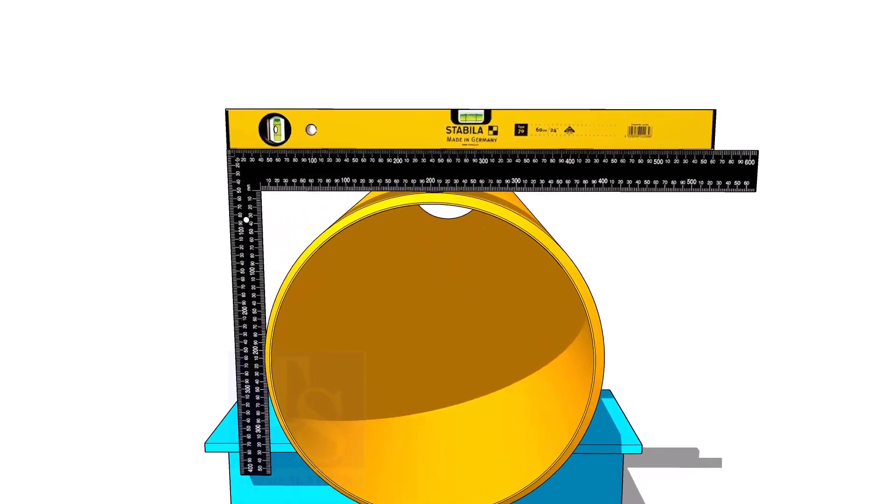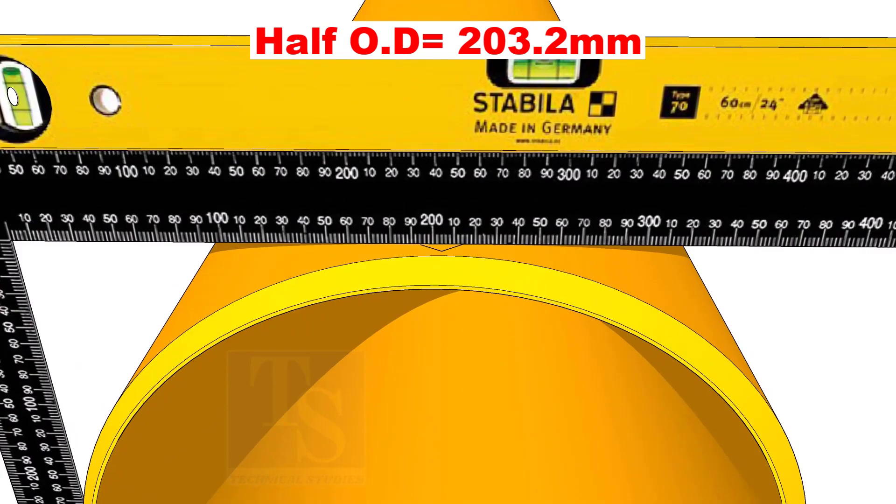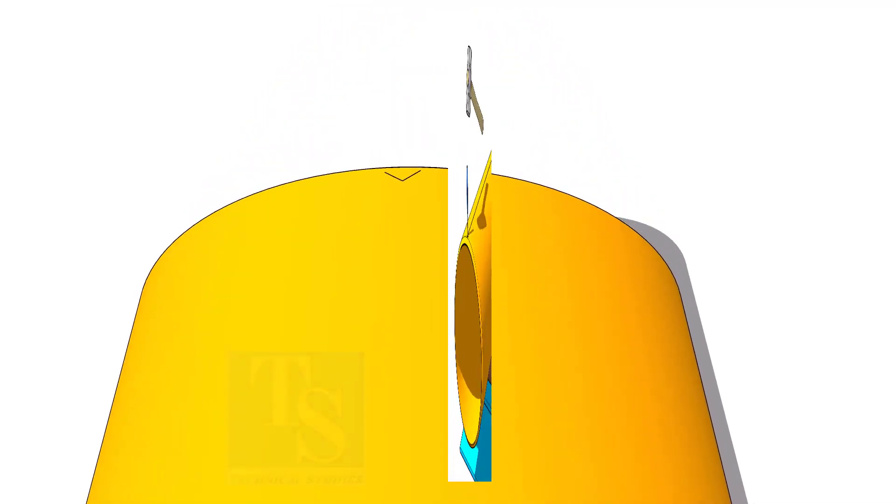Mark the half OD on the top of the pipe. Don't forget to cross-check from the opposite side. Mark the center of the other end of the pipe and draw a line.